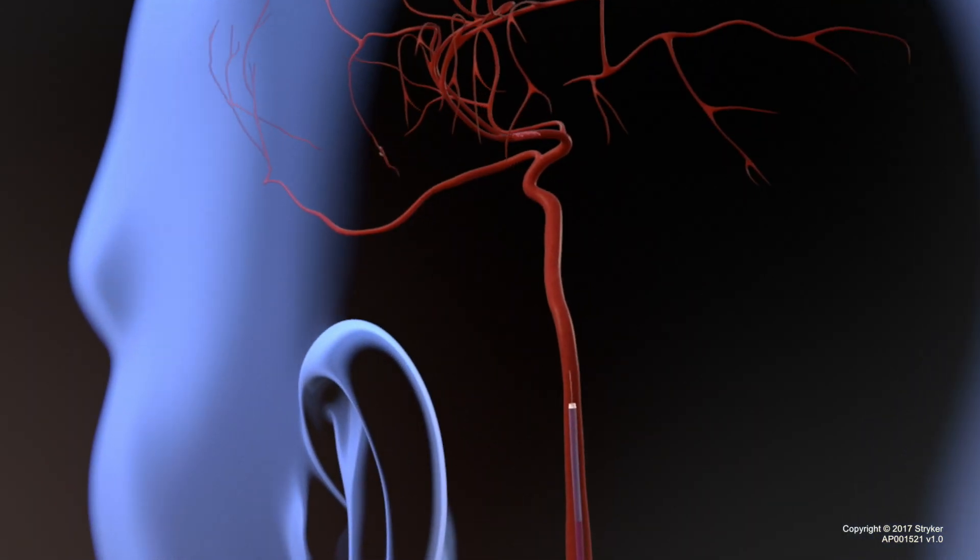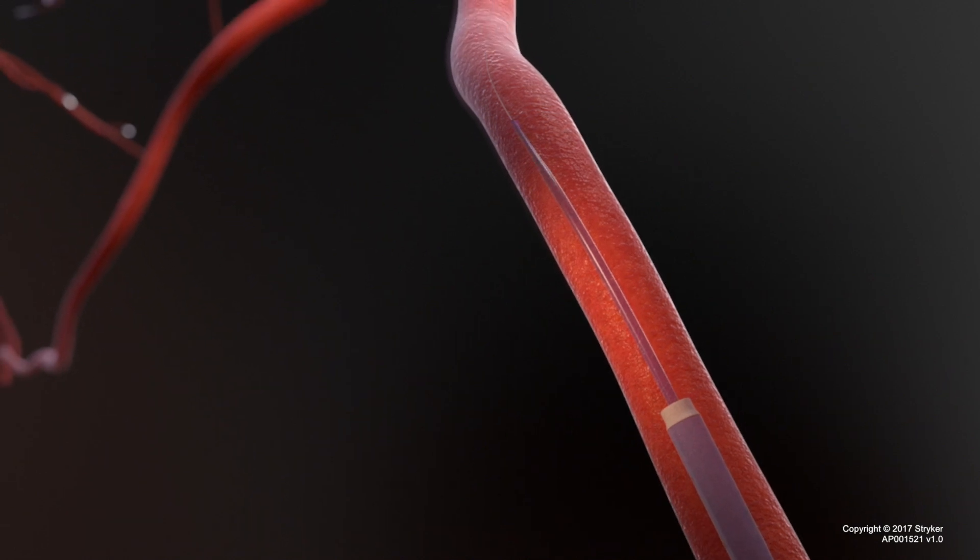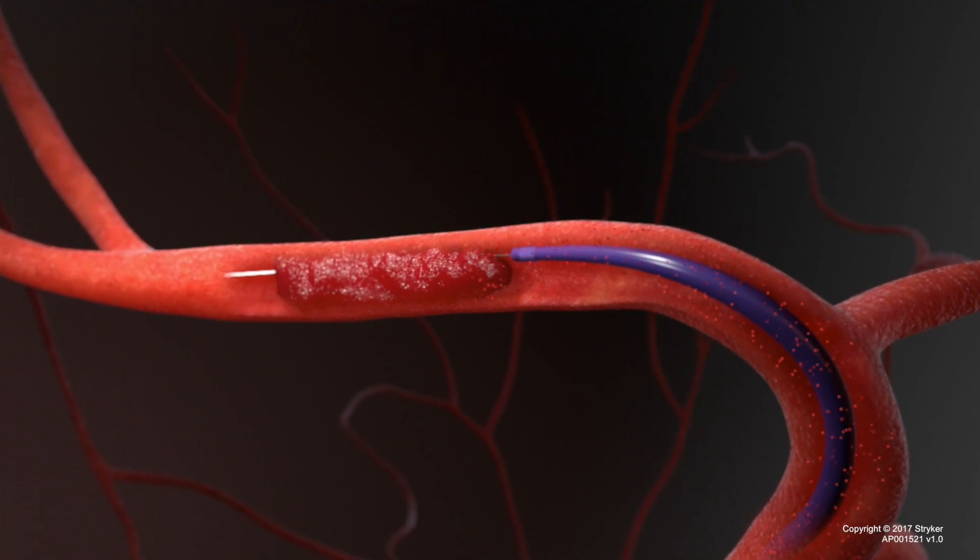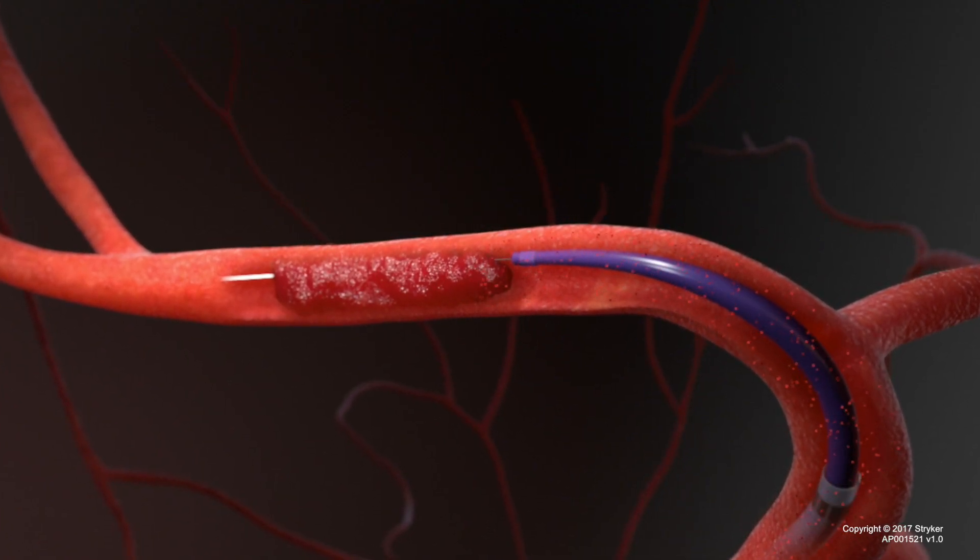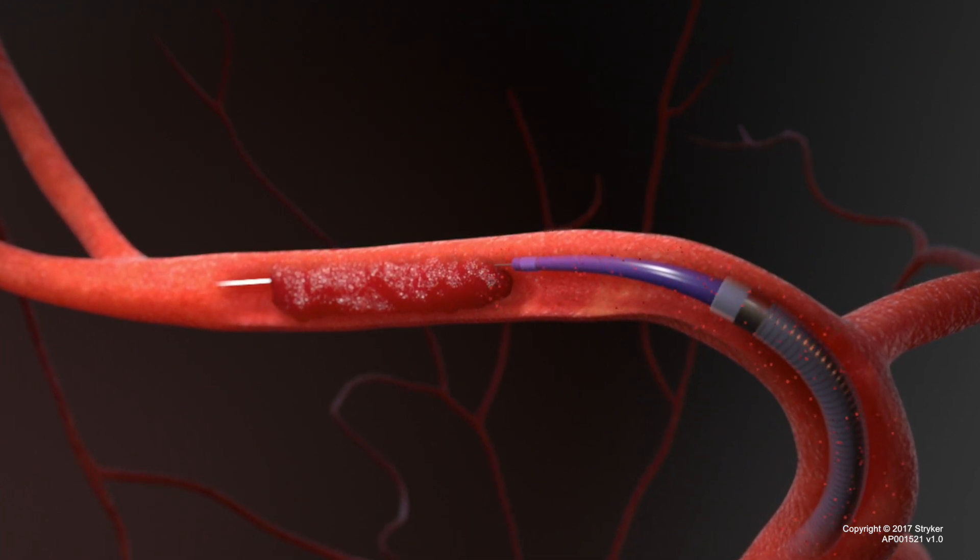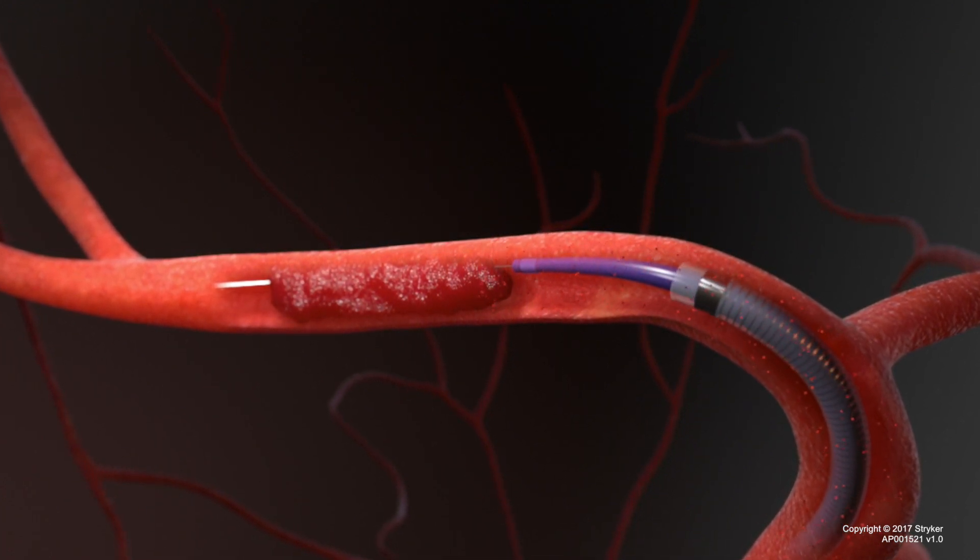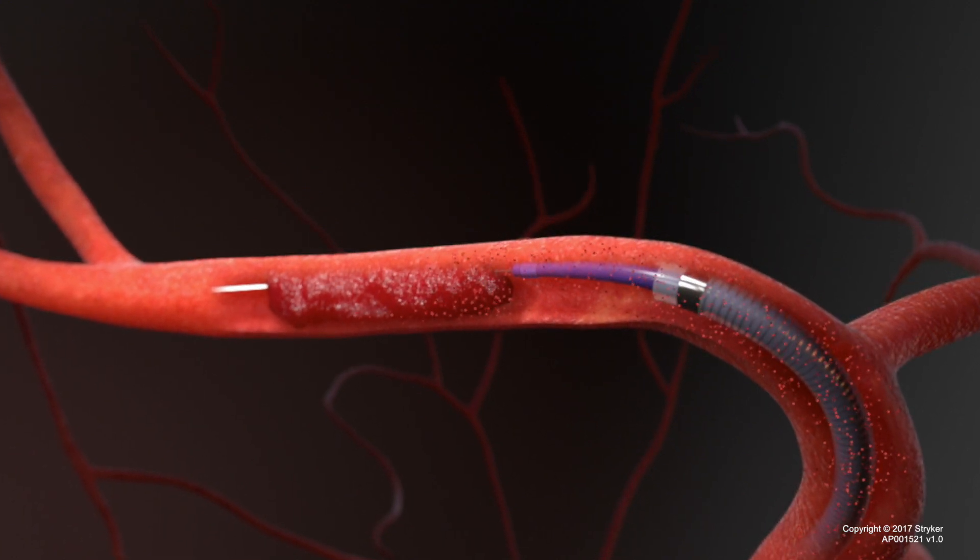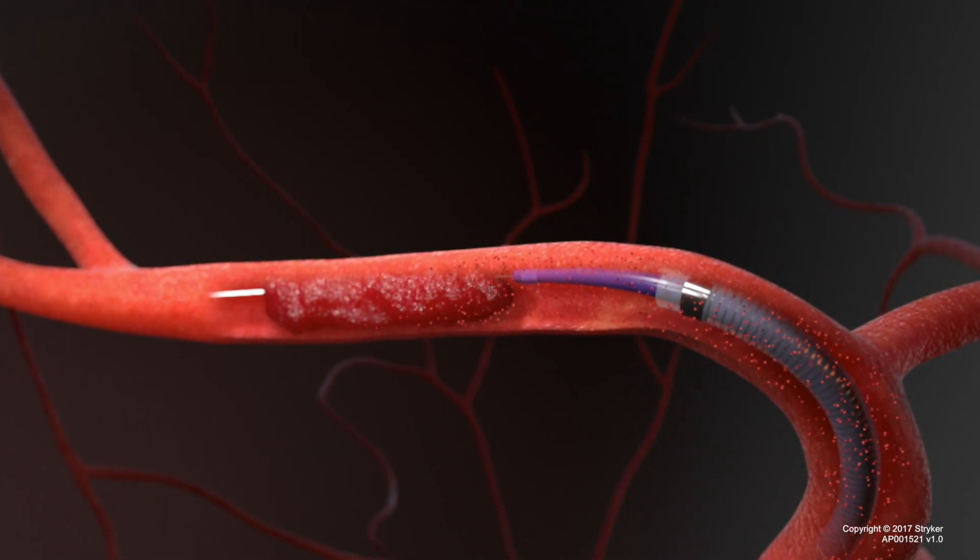After gaining access with a balloon guide catheter, advance an aspiration catheter such as the Catalyst Distal Access Catheter over the offset delivery assist catheter and guide wire to the site of occlusion. Position the Catalyst Distal Access Catheter just proximal to the occlusion.